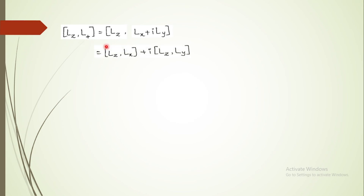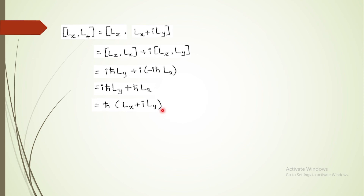Now let us consider [Lz, L+], the z component of angular momentum with the raising operator. Observing the inner product of Lz with L+, no terms vanish, and after simplification we get ℏ·Lx plus i·(Lz·Ly in reverse order giving −iℏ·Lx). Taking ℏ common we get Lx + iLy in the bracket, which is nothing but the raising operator itself. So [Lz, L+] = ℏ·L+. Similarly, [Lz, L−] = −ℏ·L−.